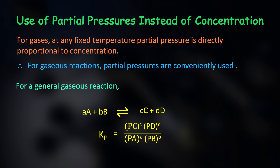As we did in the previous point with the mass-based equilibrium constant, we can now express the equilibrium constant using the partial pressure of each product and reactant.